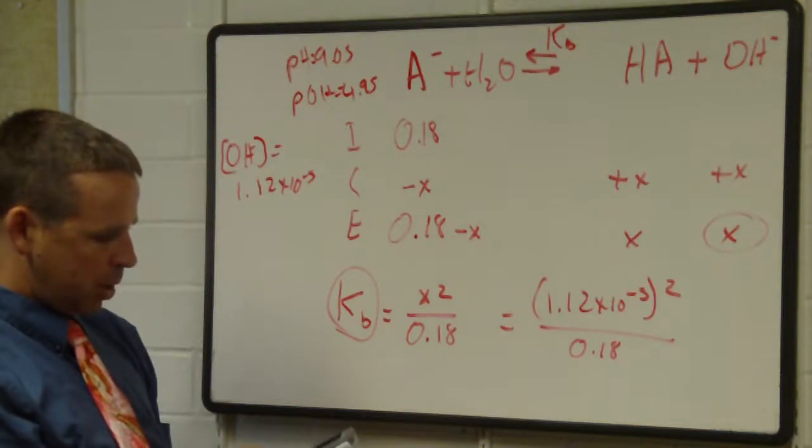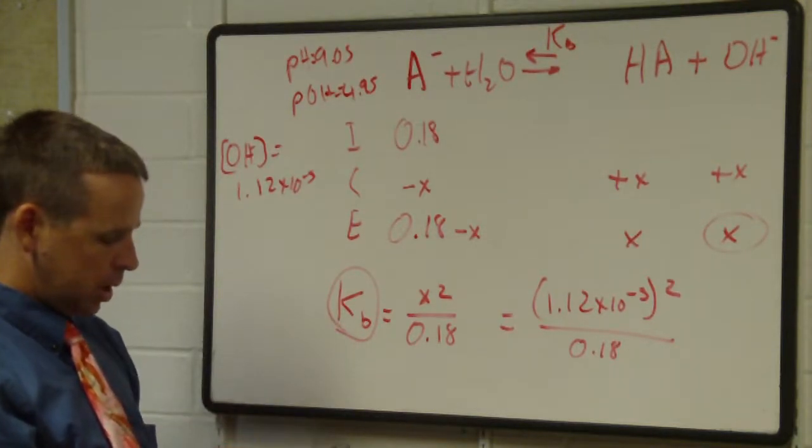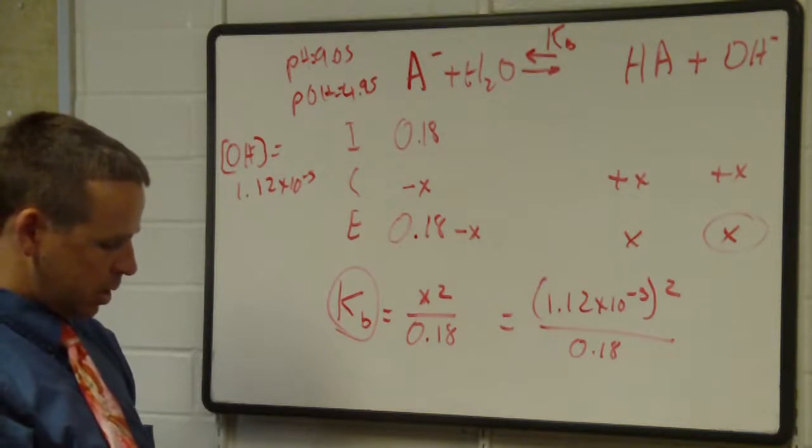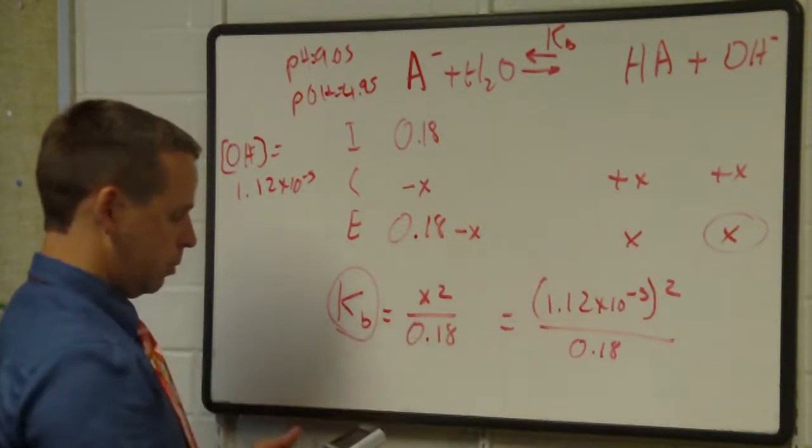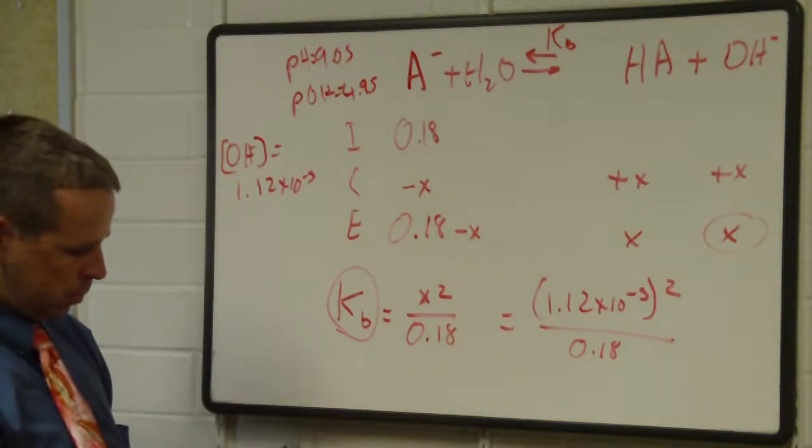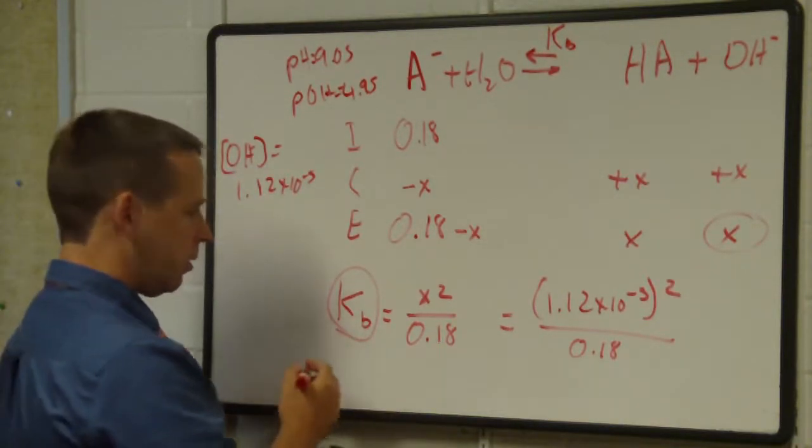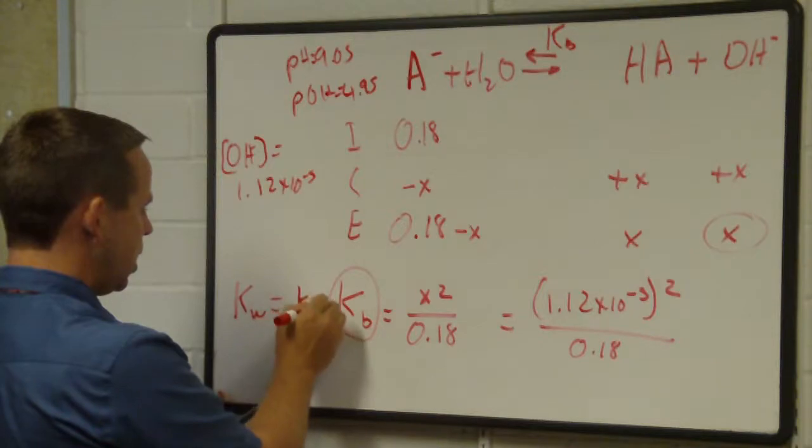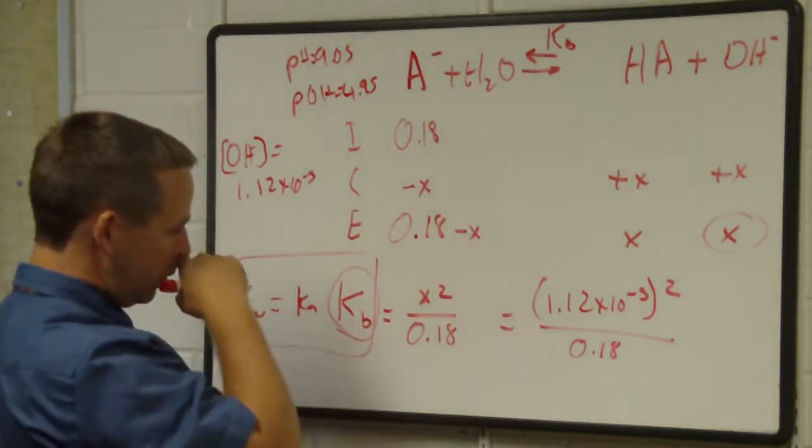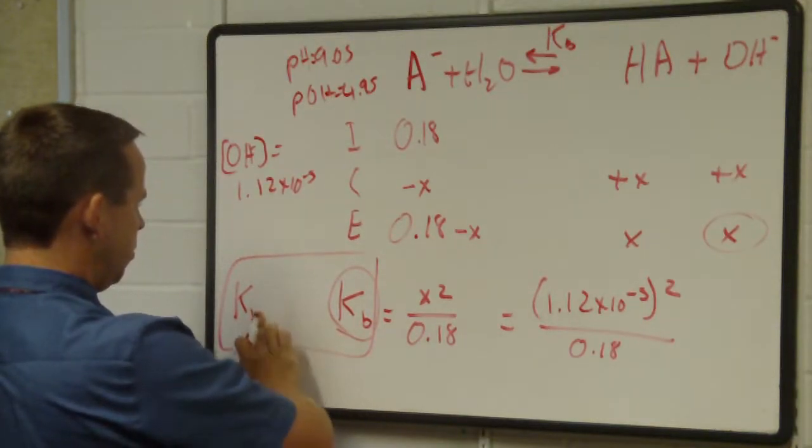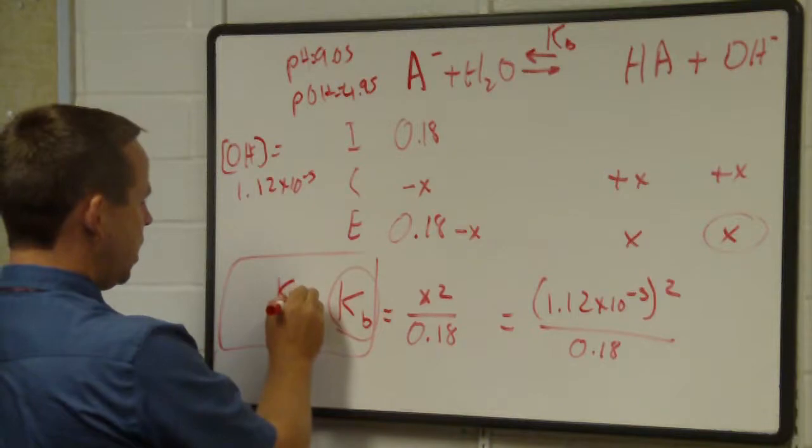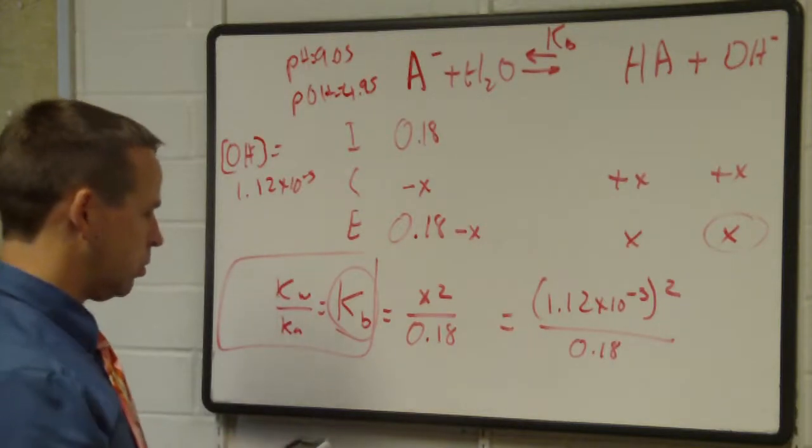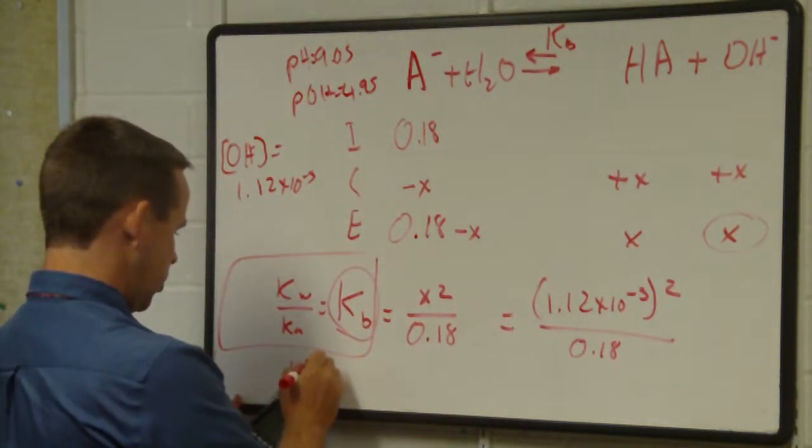That value should be equal to what my Kb is. If I take this value, square it and divide it by 0.18, and then if I take 1 times 10 to the minus 14 and divide it by whatever I got for that value there, then I should get the Ka, because the Kw equals Ka times Kb. Or in other words, Kb equals Kw over Ka.